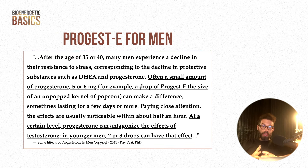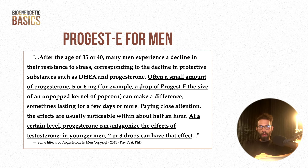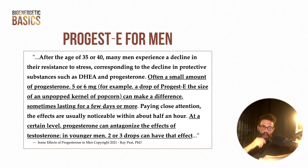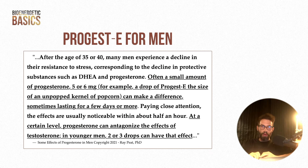For men: progesterone is often called the female hormone, but men apparently produce 12 to 15 milligrams per day. Ray says after age 35 or 40, many men experience a decline in stress resistance corresponding to declining DHEA and progesterone. Often a small amount — 5 or 6 milligrams, a drop the size of an unpopped popcorn kernel — can make a noticeable difference within half an hour. At a certain level, progesterone can antagonize the effects of testosterone; in younger men, two or three drops can have that effect. If a man experiences numbness with a very small amount, he's likely hypogonadal and may need thyroid hormone to increase testosterone.